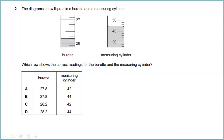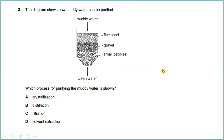Question two: the diagram shows liquid in a burette and a measuring cylinder. Which row shows the correct readings? You can see the burette reads about 27.8, and the measuring cylinder reads about 42. The scale division for the measuring cylinder is 2, so the answer is B.